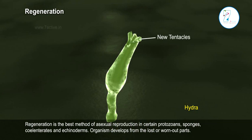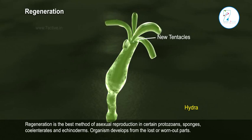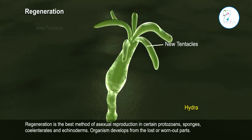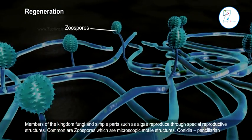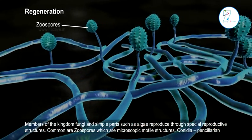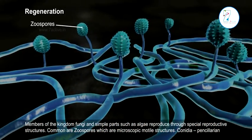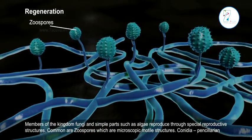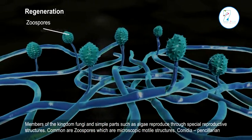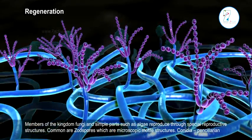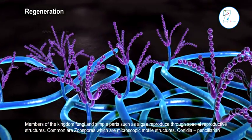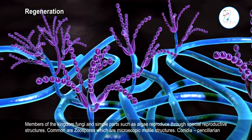An organism develops from the lost or worn out parts. Members of the kingdom fungi and simple plants such as algae reproduce through special reproductive structures. Common are zoospores, which are microscopic motile structures. Conidia, Penicillium.